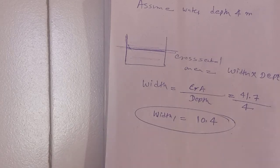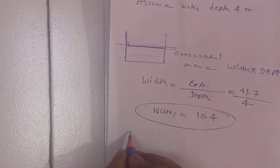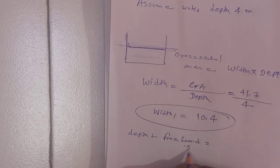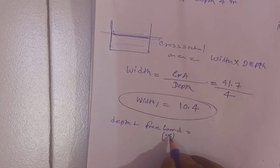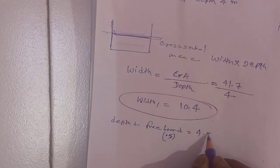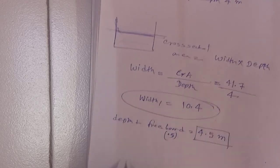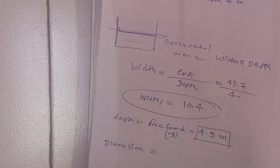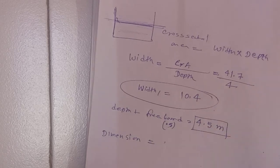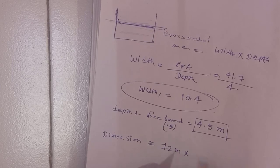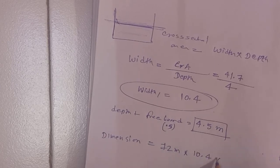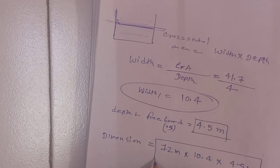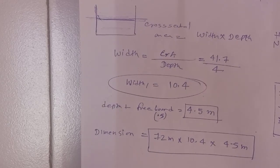Adding the freeboard, the total depth is 4.5 meters. So the final dimensions of the tank are: Length = 72 meters, Width = 10.4 meters, Depth = 4.5 meters. This completes the sedimentation tank design.